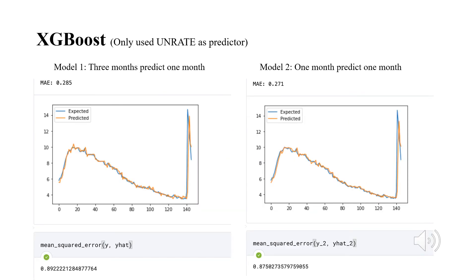Then I built an XGBoost model, and here I also only use the unemployment rate as predictor. I currently tried two models. The first one is to use the unemployment rate of the past three months to predict one month. And the second one is to use one month to predict one month. From the two plots here, we can see the mean squared error in the two models are higher than the mean squared error from the random forest model. And we can also see the second model has a higher accuracy for test set than the first one.